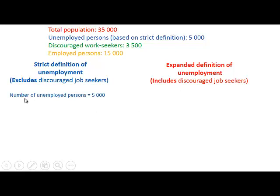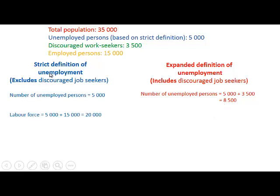According to the strict definition, the number of unemployed persons is 5,000. According to the expanded definition, the number of unemployed persons is 5,000 plus 3,500, which gives us 8,500. According to the strict definition, the labor force is 5,000 unemployed plus 15,000 employed, which equals 20,000. According to the expanded definition, the labor force is 8,500 plus 15,000, giving us 23,500.